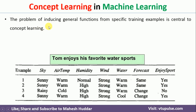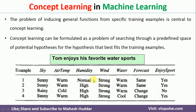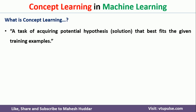Given this particular problem, we need to induce a general function from the training examples which will represent all these examples. Concept learning can be formulated as a problem of searching through a predefined space of potential solutions or hypotheses for the hypothesis that best fits the training examples. Formally, concept learning is the task of acquiring a potential hypothesis that best fits the given training examples.